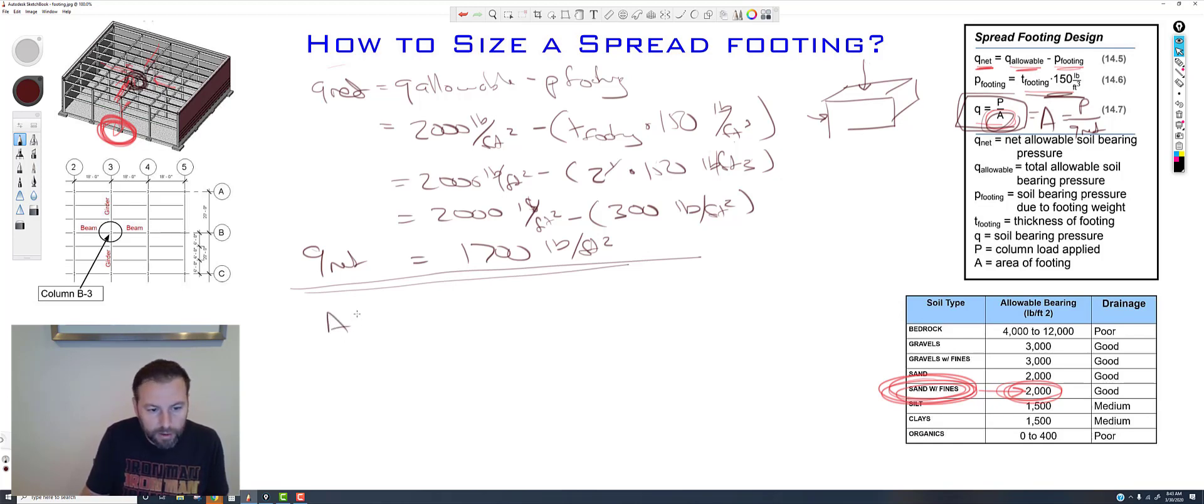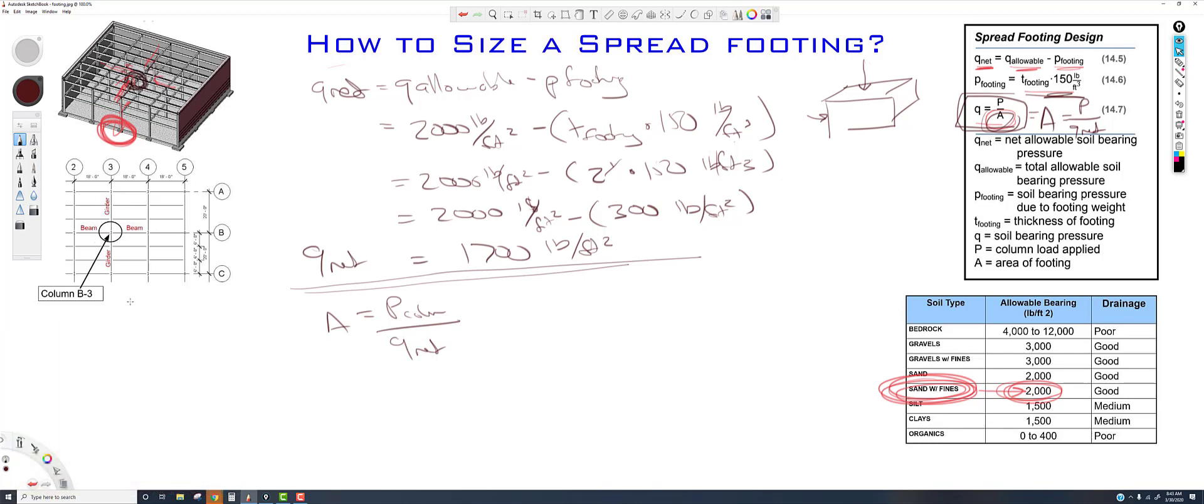So, area equals P of the column over Q net. Now, what do we have for our reaction forces and our girders and beams here? So, some numbers that we have is our roof beams. So, these are all from the roof. Are going to be, and the beam is 5,000 pounds. Our roof girders. Now, they're going to be supporting those beams, 10,000. Then, we have the second floor. So, any of this stuff here. So, second floor beams, second floor girders. Those are going to be 13,500, I believe, for the beams. And then, for the girders, we're just going to double that number and we're going to call that 27,000 pounds.